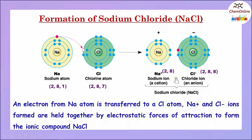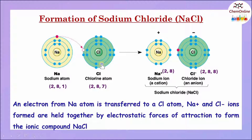Now, let us see how NaCl is formed from sodium and chlorine atoms. The sodium atom has the atomic number 11, so it has the configuration 2, 8, 1 — that is one electron in its outermost shell. Whereas, the chlorine atom with its atomic number 17 has a configuration 2, 8, 7. The chlorine atom has 7 electrons in its outermost shell, which means it is one electron short to complete the octet.